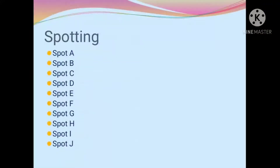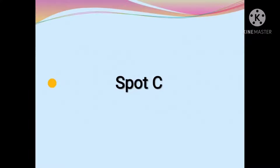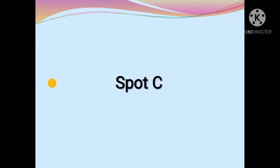In this, various spottings are there such as spot A, spot B, spot C, spot D, spot E, spot F, spot G, spot H, spot J and spot I. So all these are the different spottings. In the spotting, samples of specimens or models of that specimen will be in front of you, and then you have to observe it and write down a few points related to that. That is known as the spotting.